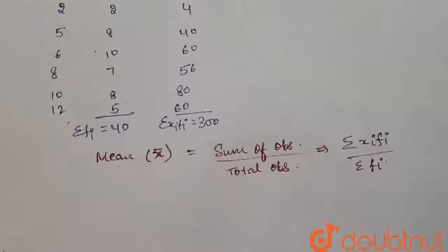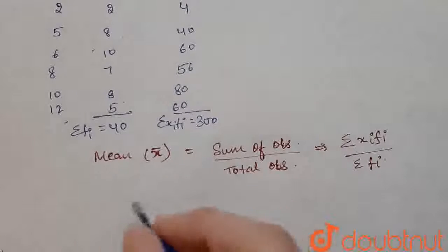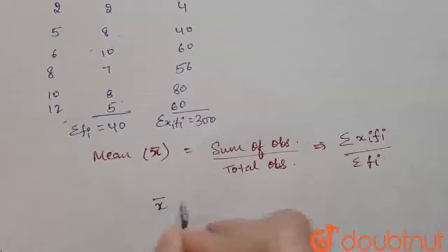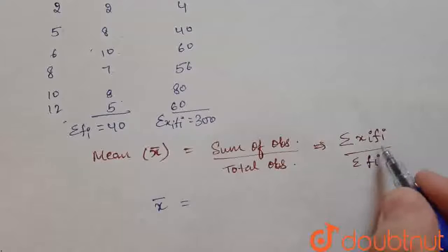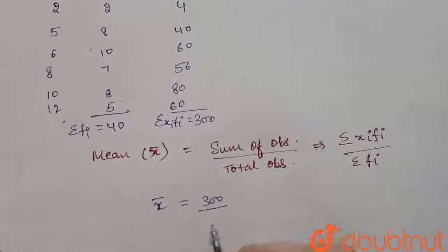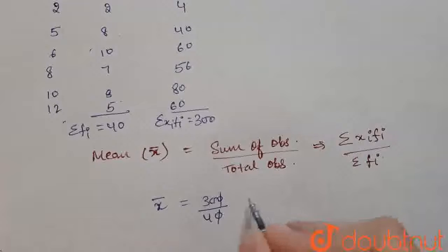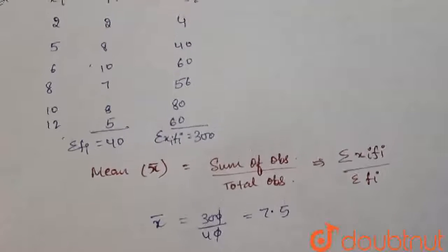So, we will calculate the mean. x bar equal to summation of xi fi which is 300 here divided by 40. On solving this, we will get 7.5. So, the mean is 7.5.